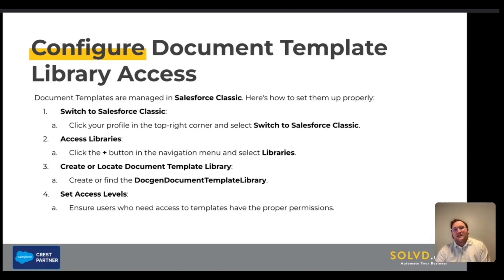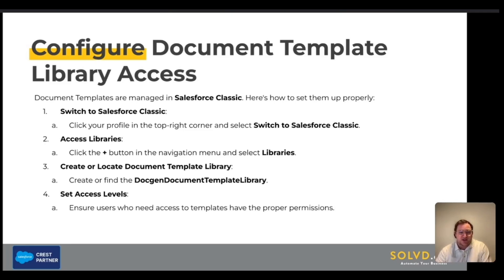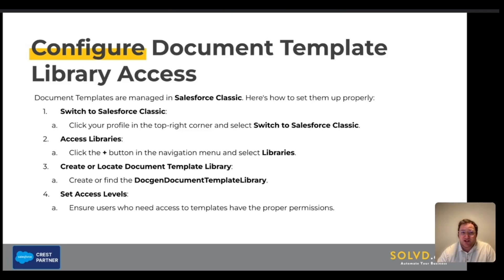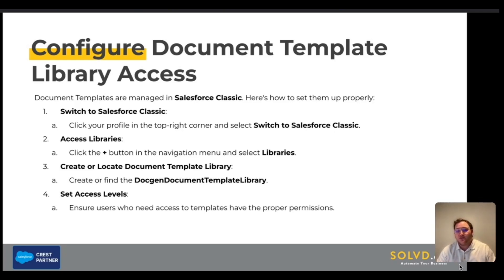To use document generation in Revenue Cloud, we need to set up document template libraries. Document template libraries are managed in Salesforce Classic. We'll first need to switch to Salesforce Classic by going to the top right corner and selecting 'Switch to Salesforce Classic.' You will then access Libraries by clicking the plus button in the navigation menu. Create or locate the document template library, and make sure it is named 'Doc Gen Document Template Library.' Ensure this library is shared with anyone who will need to use document generation — the best way to do this is through a public group.